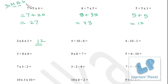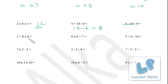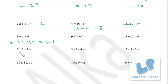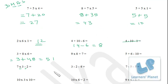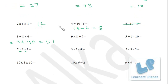Next example has addition and subtraction: 4 plus 10 minus 6. First perform addition: 4 plus 10 is 14. Then subtraction: 14 minus 6 is 8. Next: 3 plus 8 into 6. Perform multiplication first: 8 into 6 is 48. Write 3 as it is plus 48, so 3 plus 48 equals 51. Next: 7 into 3 minus 2. Multiplication first: 7 into 3 is 21. Then 21 minus 2 equals 19.